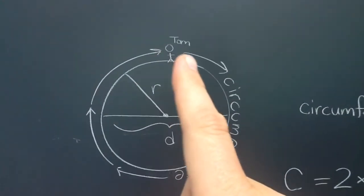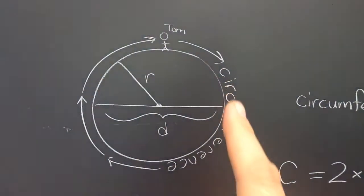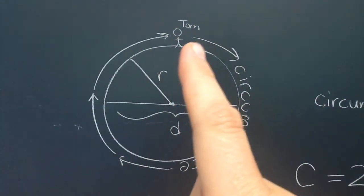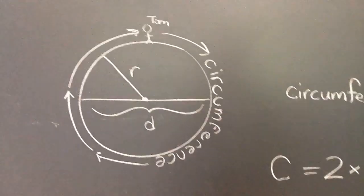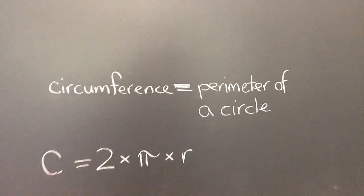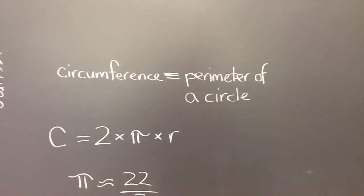So Tom is walking in a straight line on this little planetoid, and the distance that he walks until he returns to the point where he started, that's the circumference of the circle. You can think of the circumference as the perimeter of a circle.